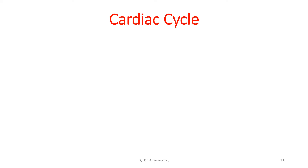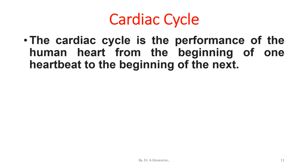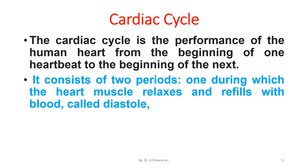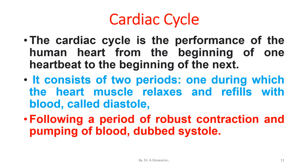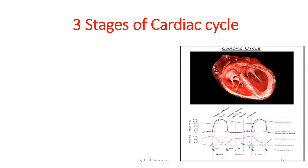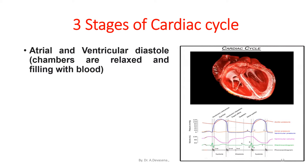The cardiac cycle is the performance of the human heart from the beginning of one heartbeat to the beginning of the next. It consists of two periods: one during which the heart muscle relaxes and refills with blood, called diastole, followed by a period of robust contraction and pumping of blood, called systole. Stage one: atrial and ventricular diastole — chambers are relaxed and filling with blood.